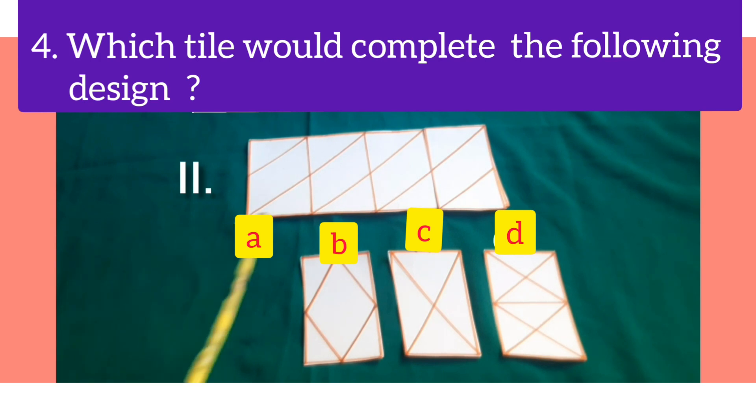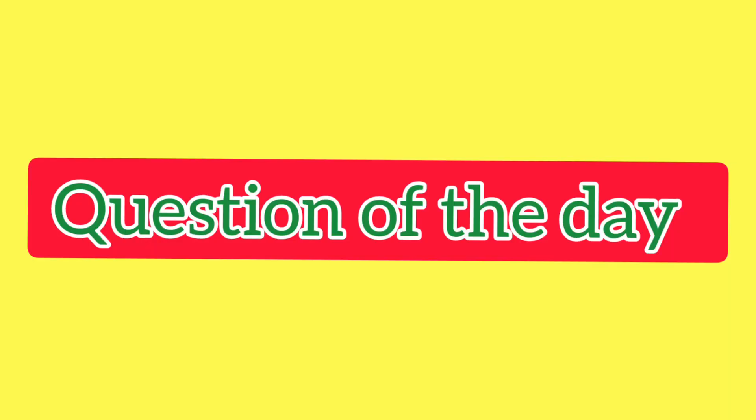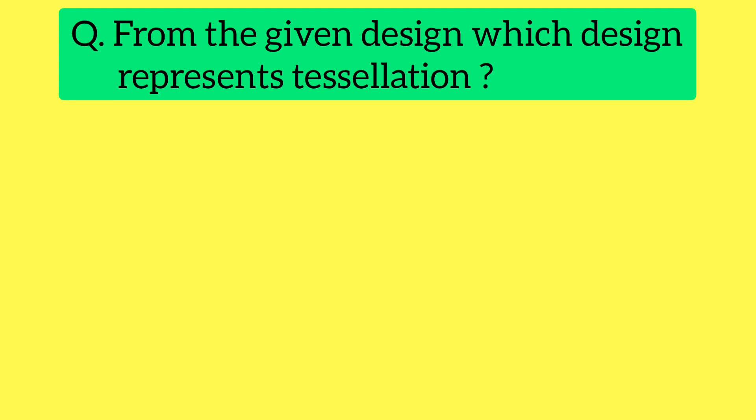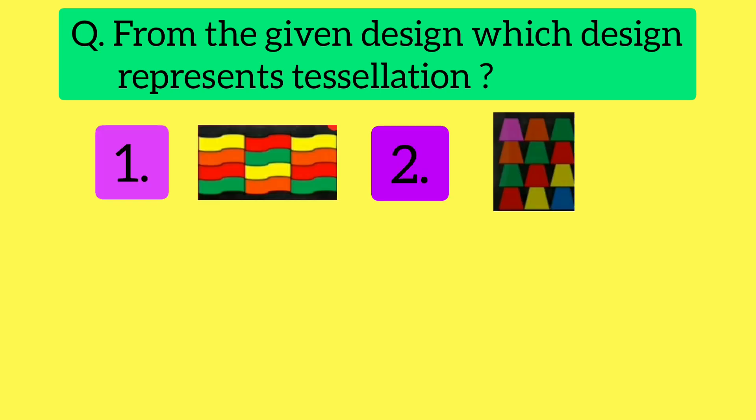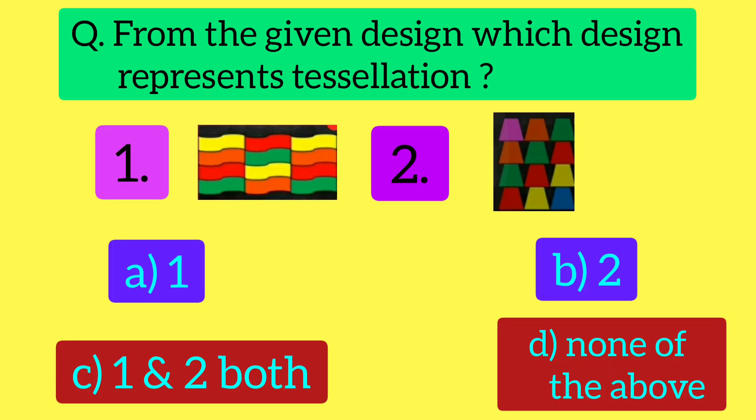Dear students, now it's turn for the question of the day. From the given designs, which design represents tessellation? So, dear students, here 2 designs are there and 4 options are given. As you have learnt about tessellation, so tell which design represents tessellation. Yes, design 1 represents tessellation because in this design, tiles are arranged in such a way that there are no gaps and no overlapping. So, option A is the right answer. So, let's take the option A.